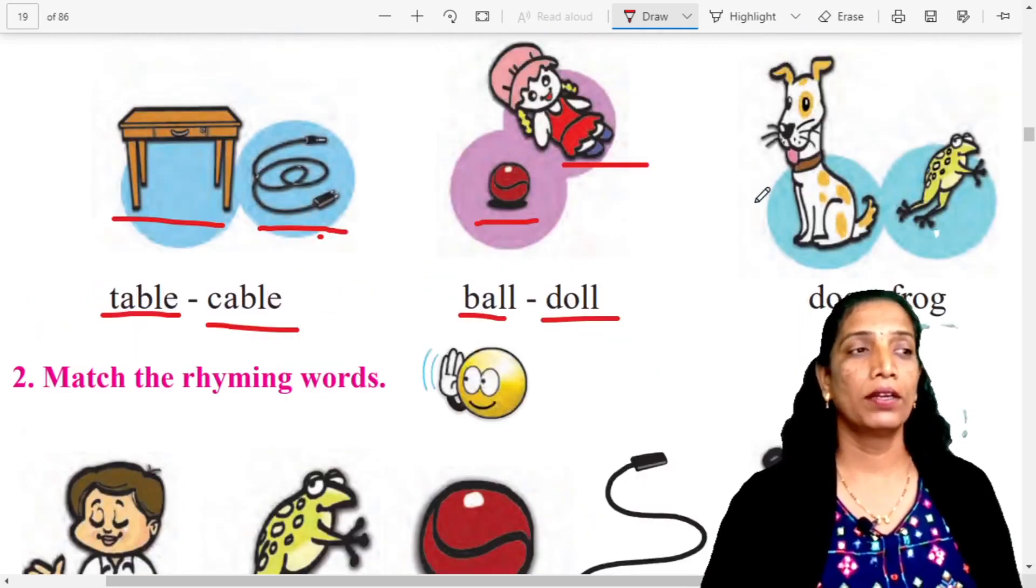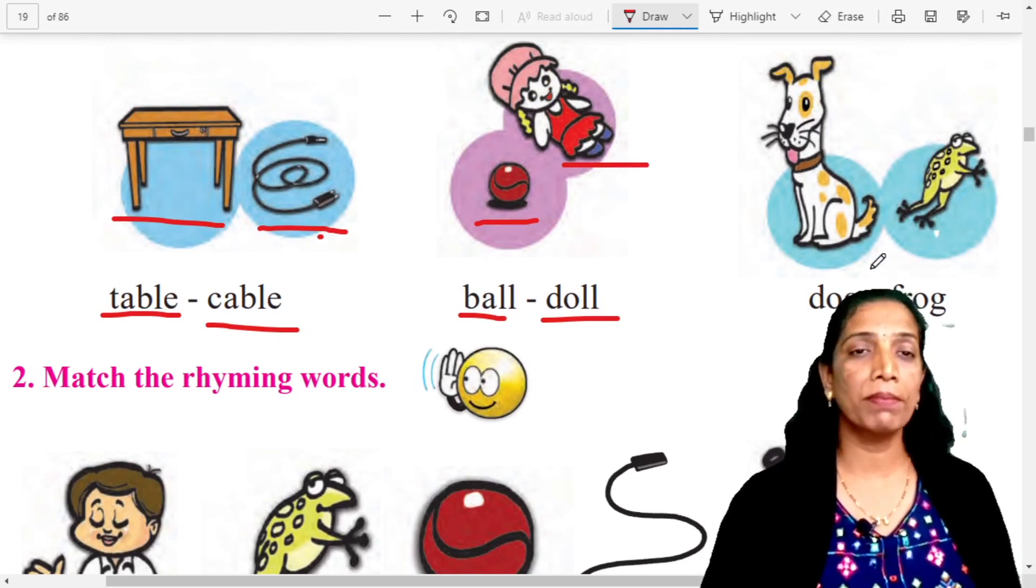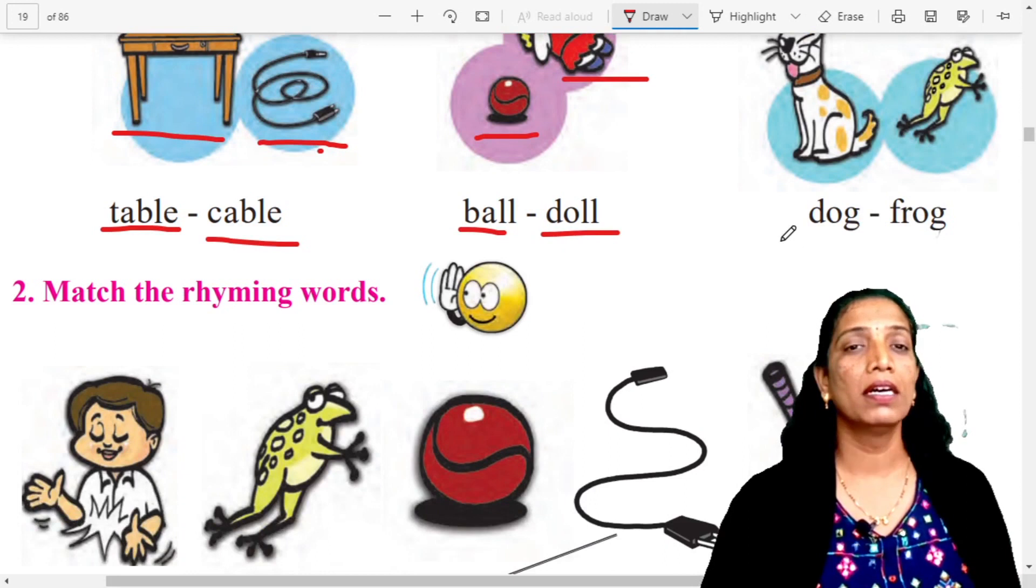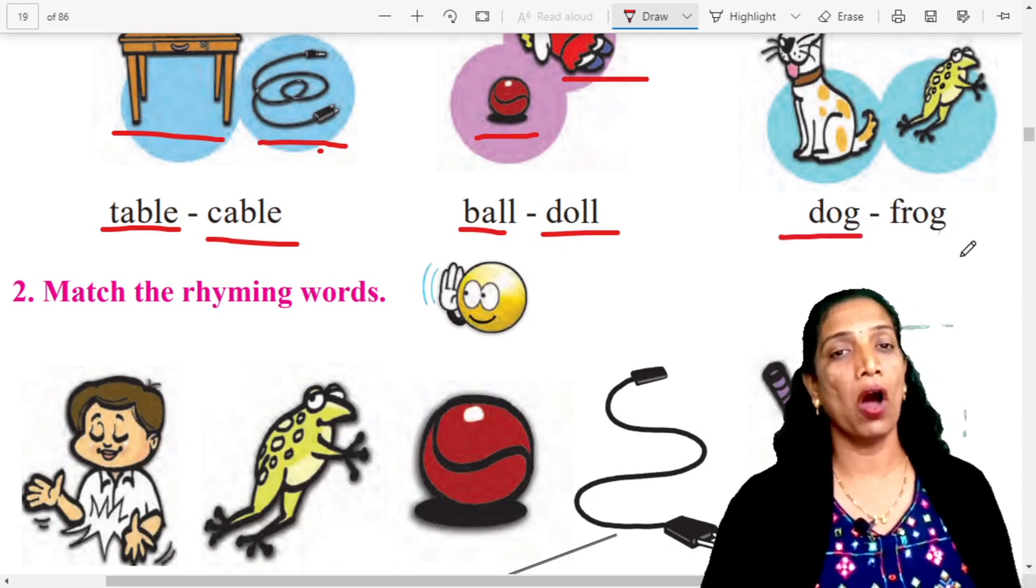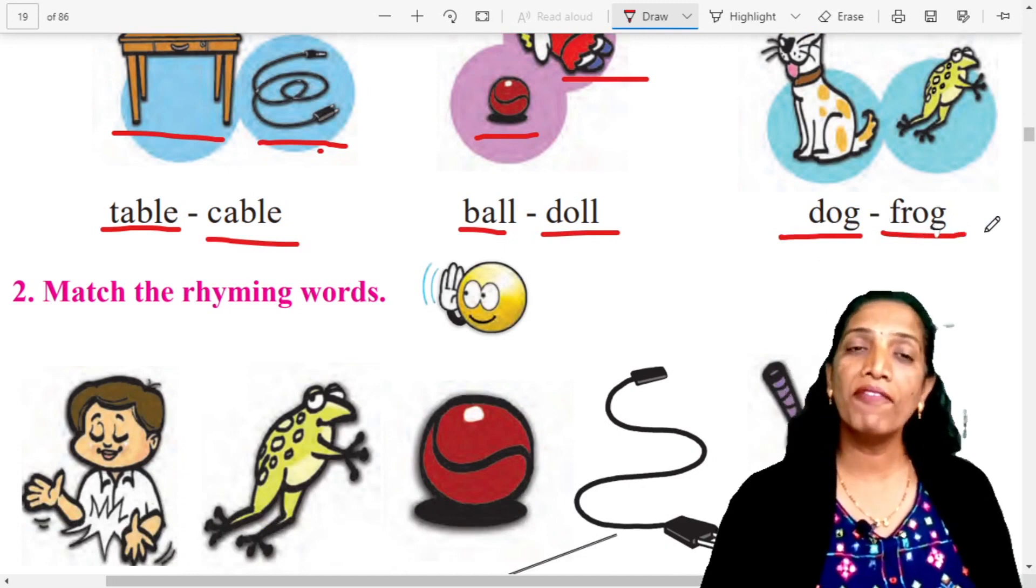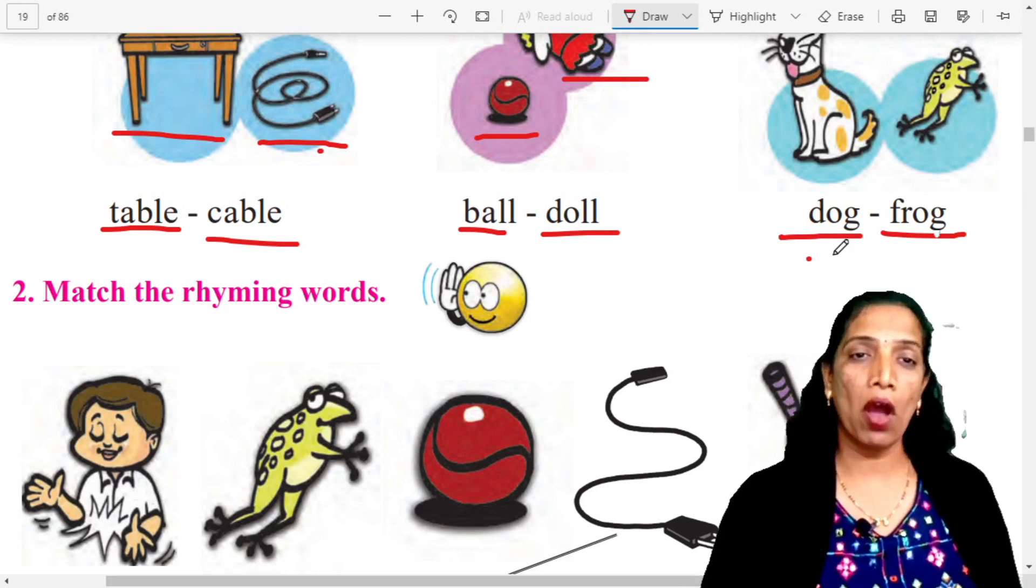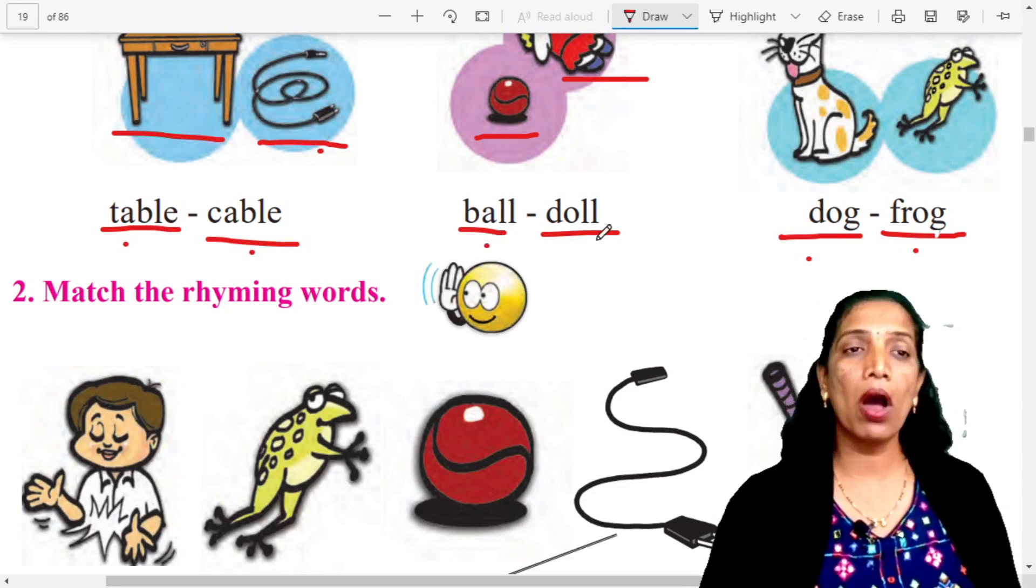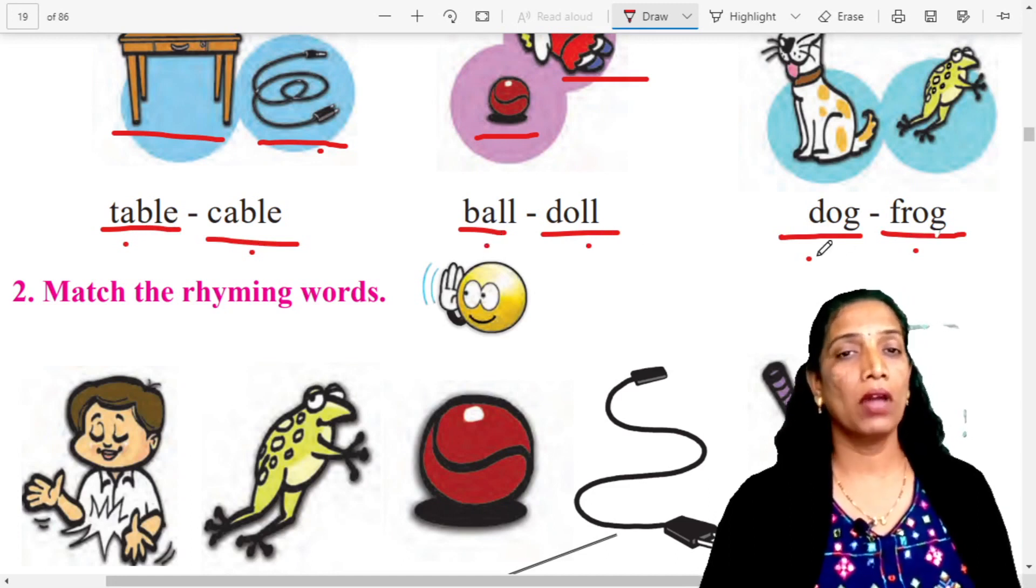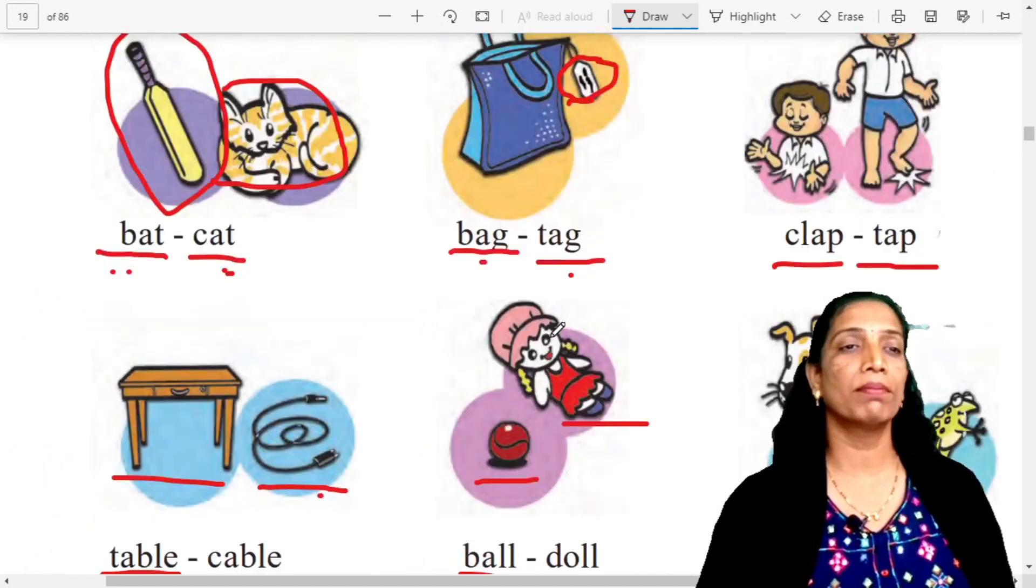What is this? Dog. And what is this? Frog. Spelling. D-O-G, dog. F-R-O-G, frog. D-O-G, dog. F-R-O-G, frog. Dog, frog. Table, cable. Ball, doll. Dog, frog. Rhyming words.